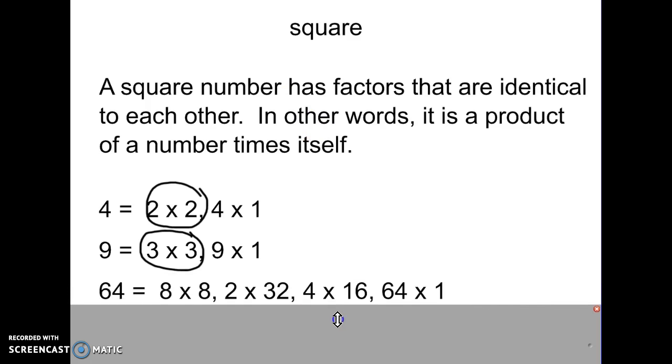And, finally, 64. So, 64 would be another example of a square number because of 8 times 8. So, again, the same number multiplied by itself, that gives you a square number. 64 is the square number, okay?